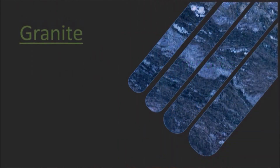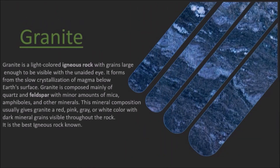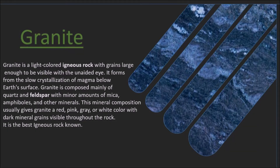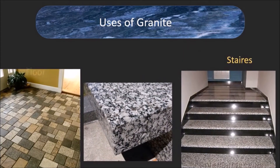Granite is a light-colored igneous rock with grains large enough to be visible with the unaided eye. It is formed from the slow crystallization of magma below the earth's surface. Granite is considered the best igneous rock. Some places where granite stone is used include staircases, floor tiles, and benches.